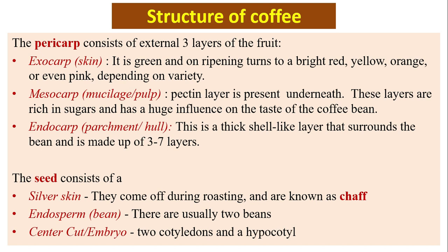The mesocarp is a mucilage or pulp padding layer present underneath. These layers are rich in sugars and have a huge influence on the taste of the coffee bean. The endocarp, or parchment or hull, is a thick shell-like layer surrounding the bean made up of three to seven layers. The seed consists of a silver skin — which comes off during washing and is known as chaff — an endosperm or bean, a center cut or embryo, two cotyledons, and a hypocotyl.